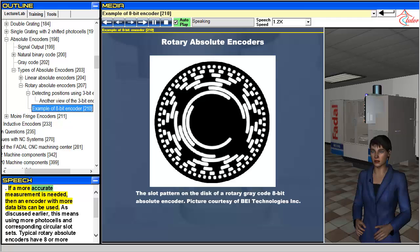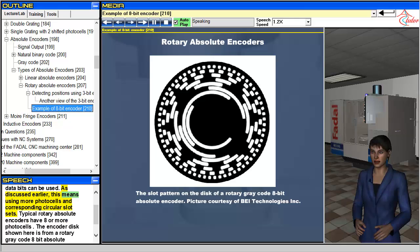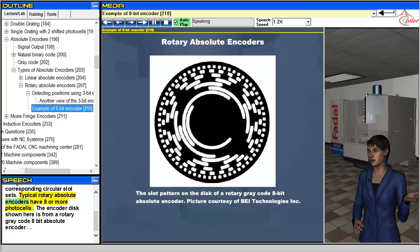If a more accurate measurement is needed, then an encoder with more data bits can be used. As discussed earlier, this means using more photocells and corresponding circular slot sets. Typical rotary absolute encoders have eight or more photocells. The encoder disc shown here is from a rotary gray code 8-bit absolute encoder.